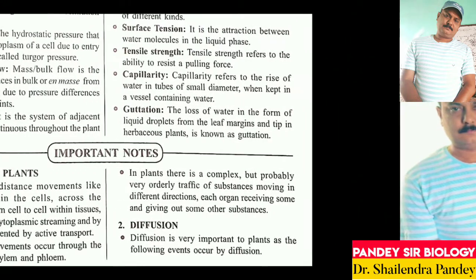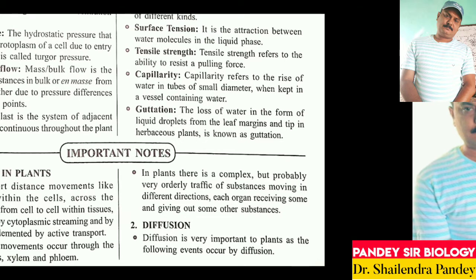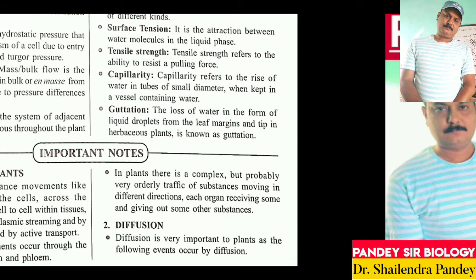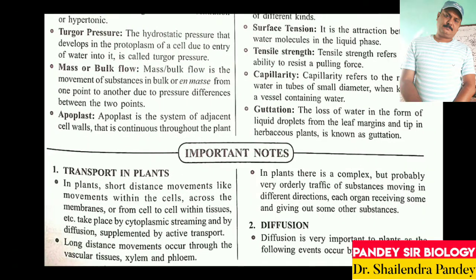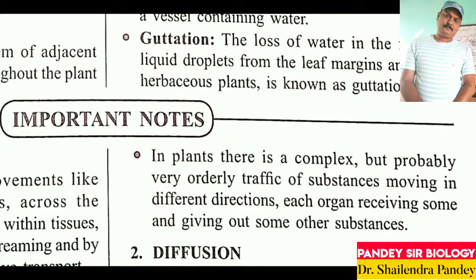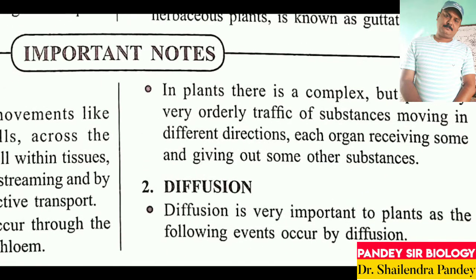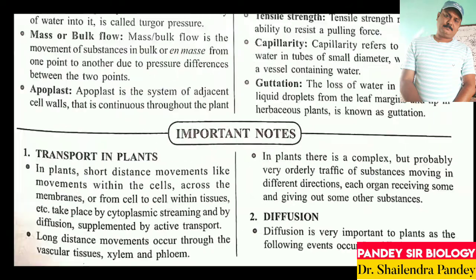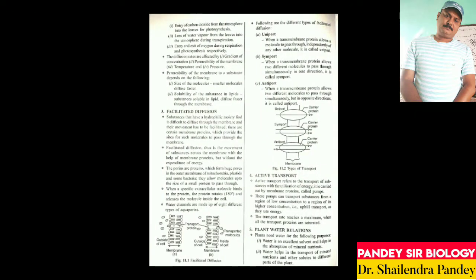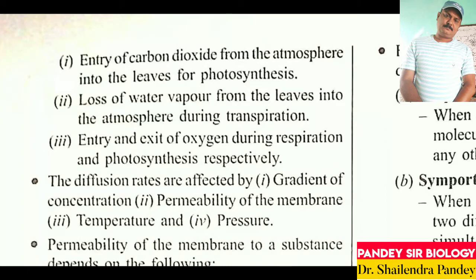Diffusion is very important to plants. The following events occur by diffusion: entry of carbon dioxide from the atmosphere into the leaves for photosynthesis, loss of water vapor from the leaves into the atmosphere during transpiration, and entry and exit of oxygen during respiration and photosynthesis respectively. Diffusion rates are affected by concentration gradient, permeability of the membrane, temperature, and pressure.